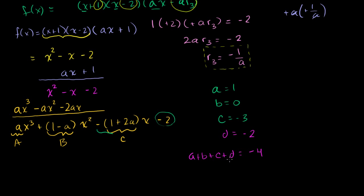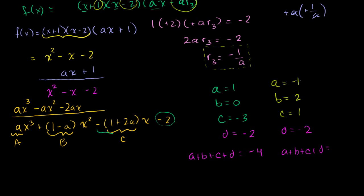We could just as easily have picked a different value. For instance, a could be -1. If a = -1, then b = 1 - (-1) = 2, c = -1 - 2(-1) = 1, and d is always -2. Then a + b + c + d = -1 + 2 + 1 + (-2) = 0. So we don't know exactly what answer the problem writer was looking for, but it's a pretty interesting problem.